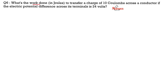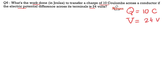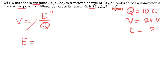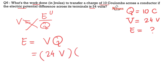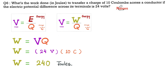Question number 6: what is the work done in joules to transfer a charge of 10 coulombs across a conductor if the electric potential difference across its terminals is 24 volts? We have Q equals 10 coulombs and V equals 24 volts. We want the work done, or energy. Using V equals E over Q, cross multiplication gives E equals V times Q, which is 24 times 10 equals 240 joules. Energy and work are measured in joules.